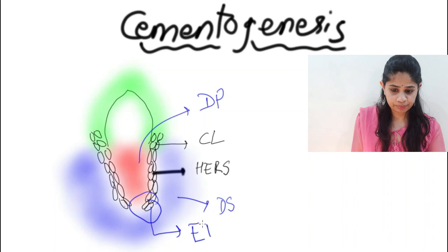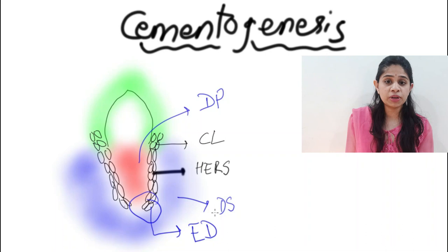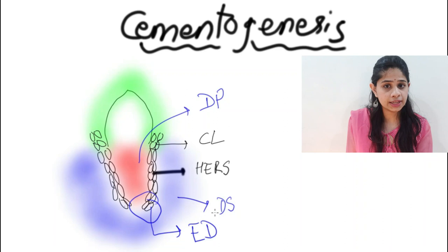The epithelial root sheath helps in the formation of a mold onto which the radicular dentine and the cementum surface are laid down. In the next step, the epithelial diaphragm sends out signaling molecules.